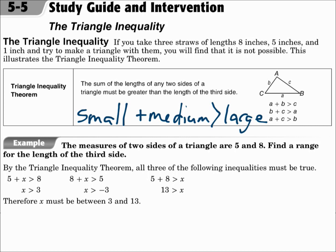The Triangle Inequality says that the sum of the lengths of any two sides of a triangle must be greater than the length of the third side. The quickest way to check is to take the smallest side plus the medium side, and that has to be greater than the large side. Equal is not good enough — it has to be greater than.